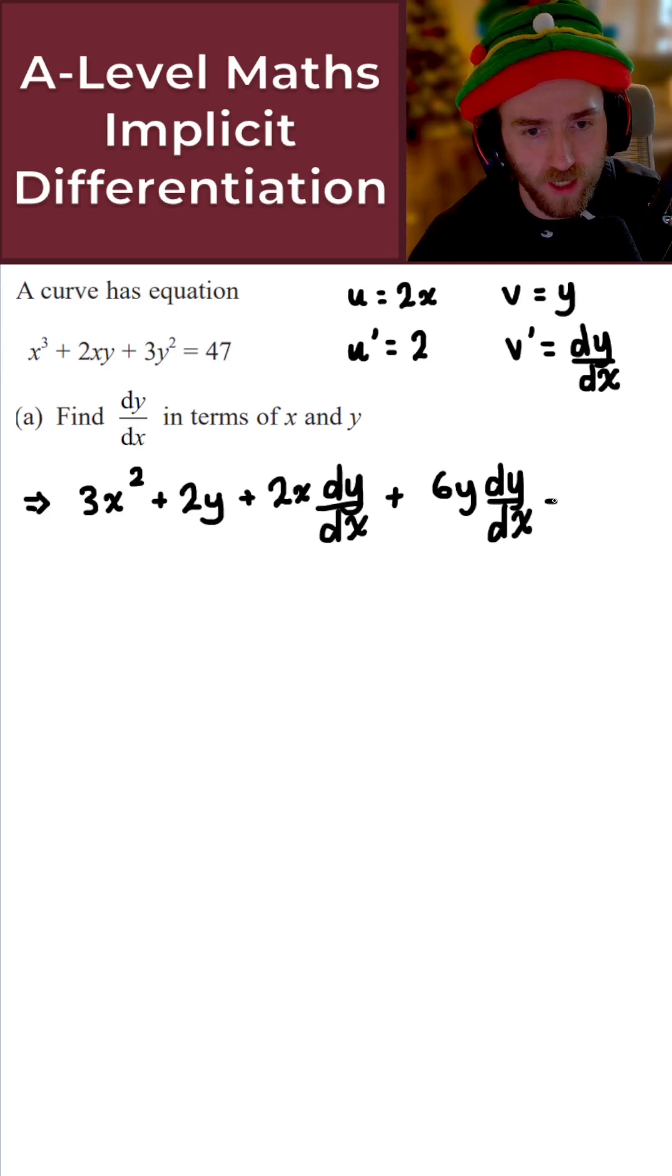And then finally for the right-hand side, that's just a constant, 47. If I differentiate that, you simply get 0.